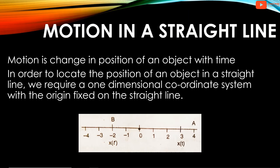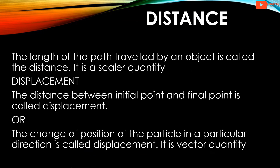In straight line motion, to specify the position of an object, one coordinate is sufficient. In order to locate the position of an object, the reference point is called the origin.